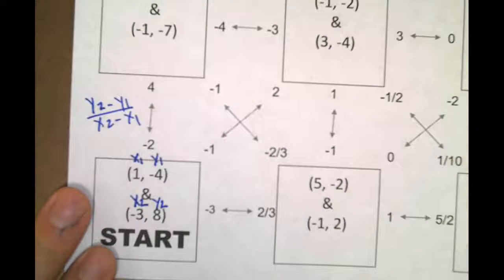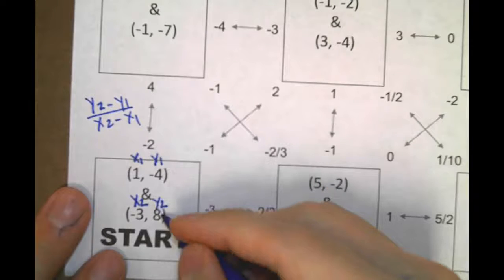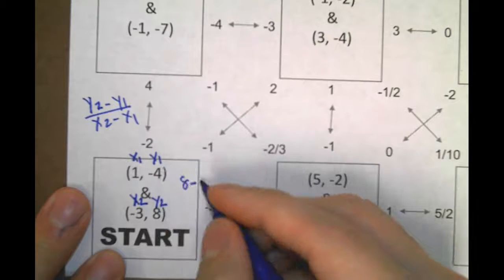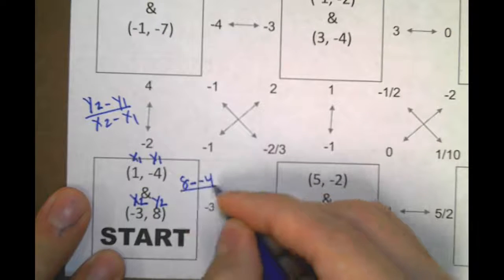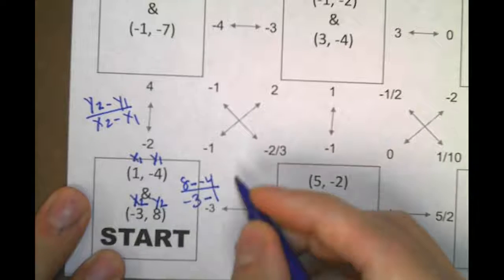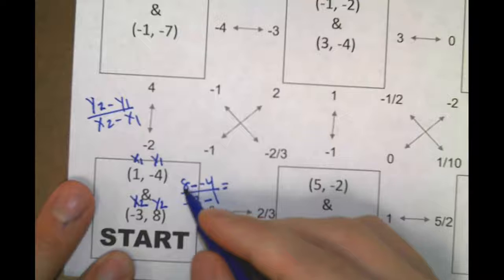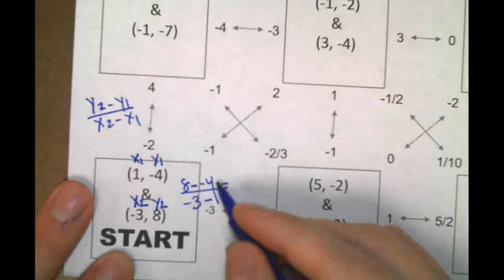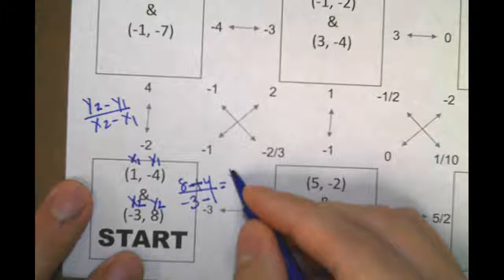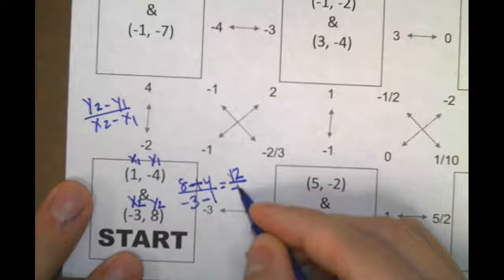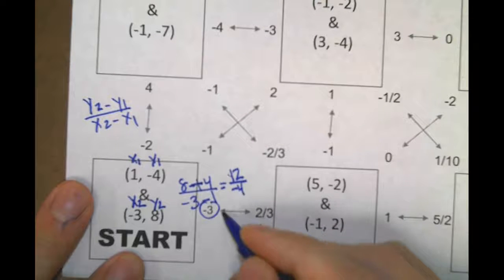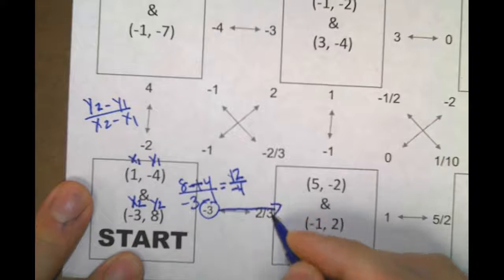Next step we're going to do is we're going to plug these in. We have 8 minus negative 4 over negative 3 minus 1. That ends up being equal to, if you have minus a negative number, it's the same as adding 12 over negative 4. 12 divided by negative 4 is going to be negative 3. Move over.